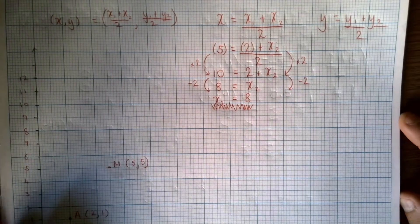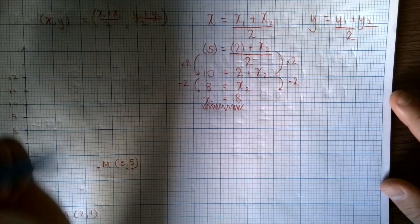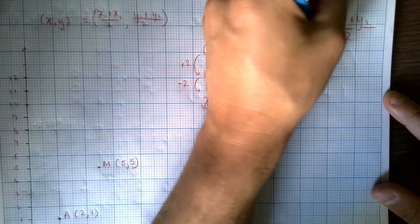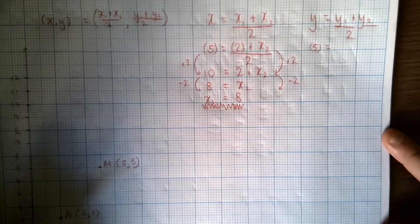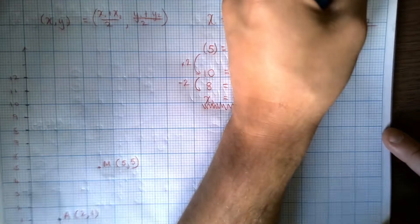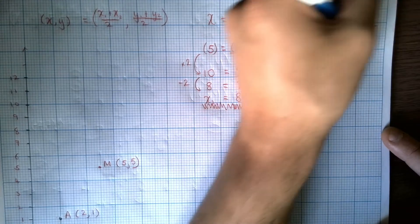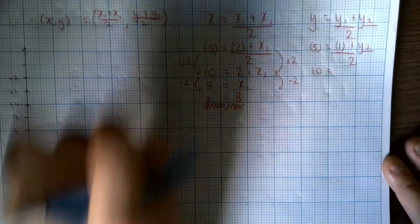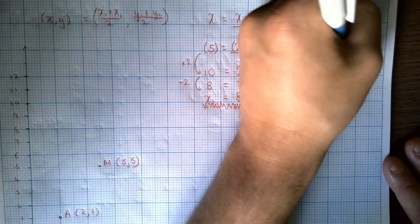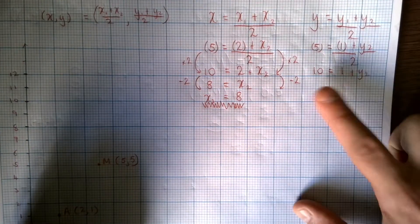Now, we're going to do the same thing on the right-hand side. So I know the Y coordinate. That's the Y coordinate for M. So again, it's going to be 5 in brackets to show that you are substituting it in. And we know that Y1 equals 1. So I'm going to do a 1 in brackets plus Y2 all over 2. Now, it's the exact same process. So we're going to times both sides by 2 or multiply both sides by 2 to leave me with 1 plus Y2 equals 10. So again, I will put my arrows in just to show what we've done.